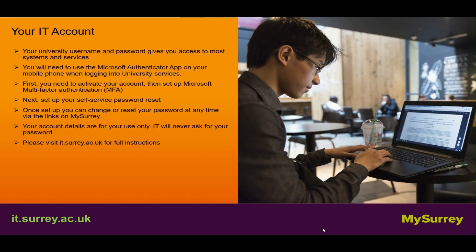Your IT account: your University username and password gives you access to most systems and services. You'll need to use the Microsoft Authenticator app on your mobile phone when logging into University services. First, you need to activate your account. Then, set up Microsoft multi-factor authentication. Next, set up your self-service password reset. Once set up you can change or reset your password at any time via the links on mySurrey. Your account details are for your use only — IT will never ask you for your password. Please visit it.surrey.ac.uk for full instructions.